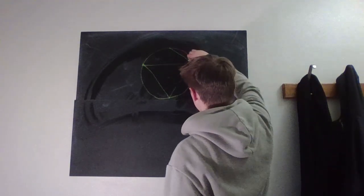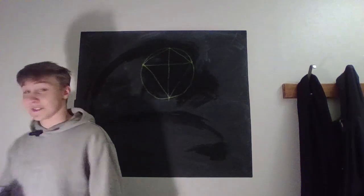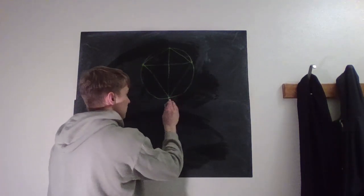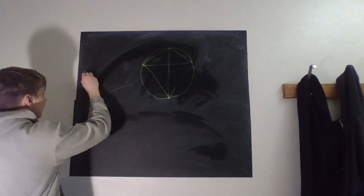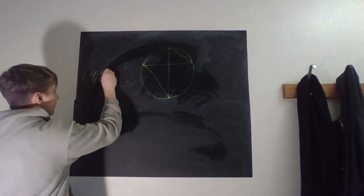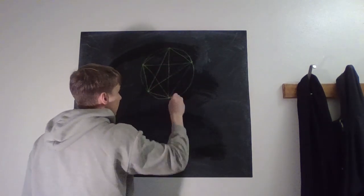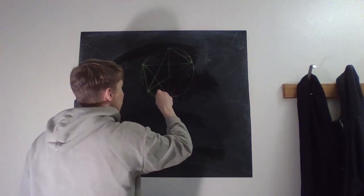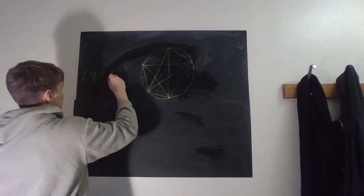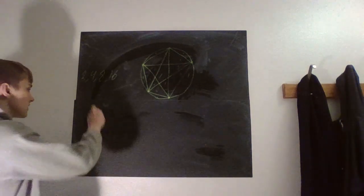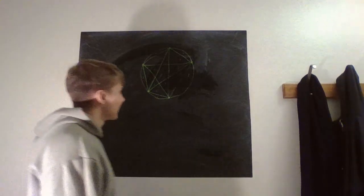If you add another point you get eight, and the fascinating part about this problem is what you find if you just try some values. With two points it's two areas, then four, then eight, then sixteen — so you might think it's just two to the power of n. But actually this would be incorrect.